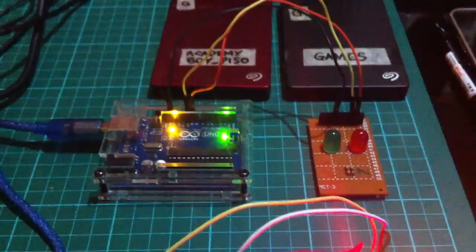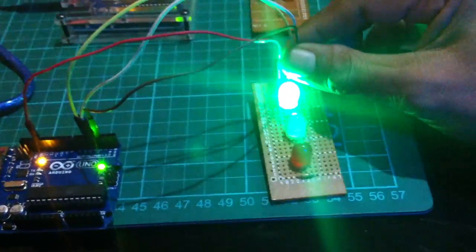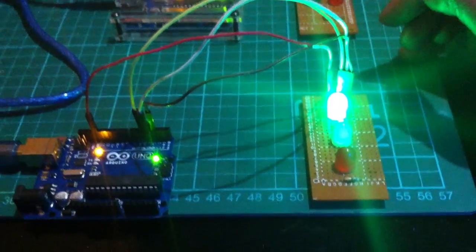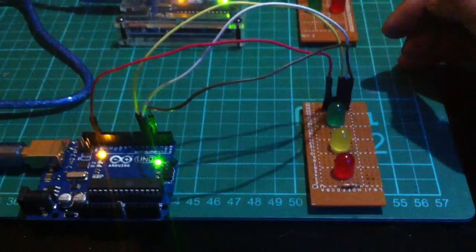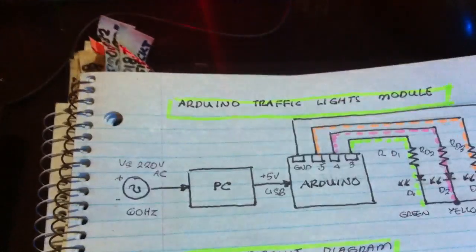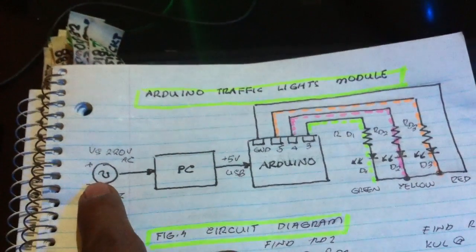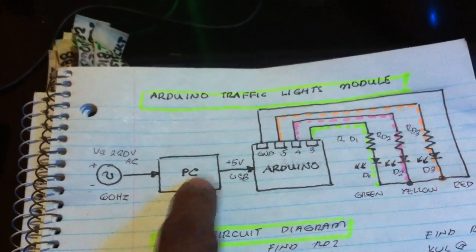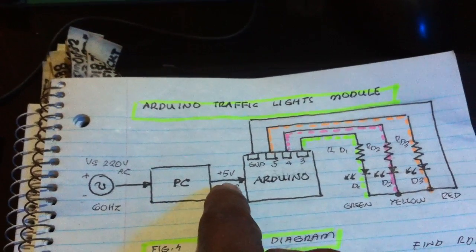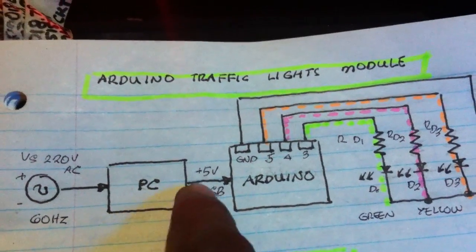That's the previous circuit using Arduino — a flip-flop. And this one is our new circuit, the traffic lights module. Let us see the circuit diagram. This is the Arduino traffic lights module; we are connected to a 20-volt source. The Arduino is connected to the PC via USB port, and the USB port supplies 5 volts.